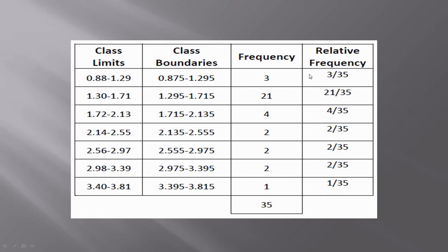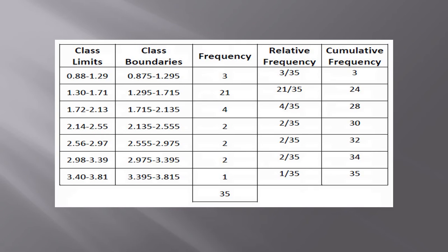is 3 and the total frequency value is 35. The first class relative frequency value is 3 over 35. Likewise, you can find all the relative frequency values for each and every class.